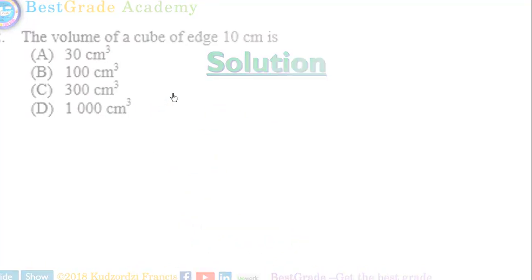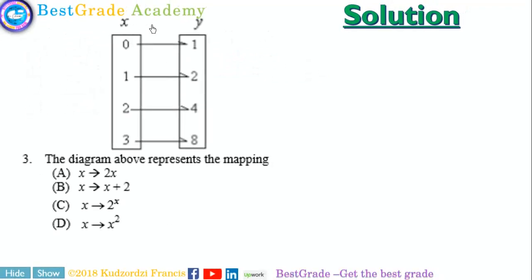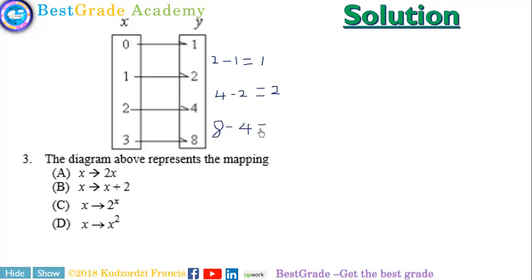The correct answer is D. Now we have to check whether there is a constant difference. So: 2 minus 1 is equal to 1; 4 minus 2 is equal to 2; 8 minus 4 is equal to 4. The difference is not constant, so it cannot be a linear relation.